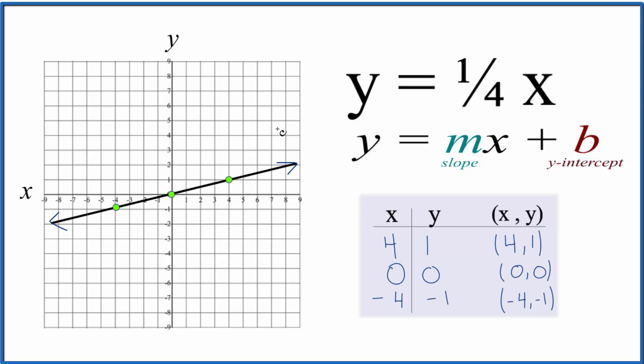So we have our y-intercept and the slope, the one-fourth, we can consider that to be rise over run. So we can go to our y-intercept, which we said was zero, and then we can go up one and over one, two, three, four.